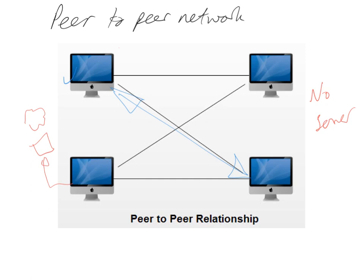Once all the security and sharing permissions are set up on a peer-to-peer network, computers can start sharing resources. For example, if a printer is attached to one computer, another computer can send a print request to that computer, which then sends it to the printer. It's a little more hassle to get all the permissions set up, but overall it's a less complex and cheaper network to have.